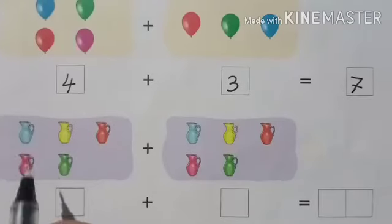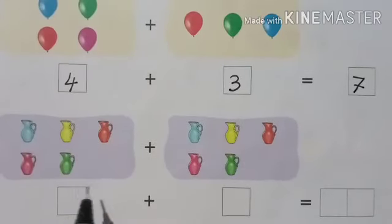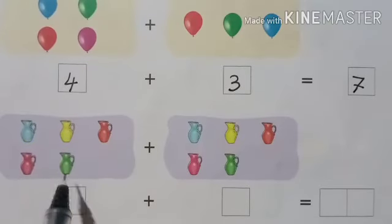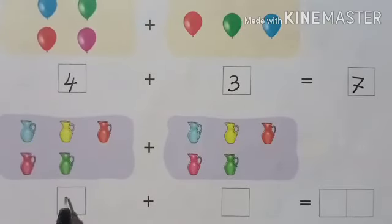Now next one children. Jug. In one side, how many jugs are there? 5. 1, 2, 3, 4, 5. In box, you write 5.